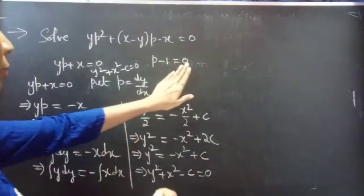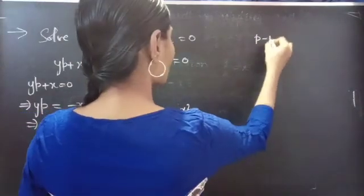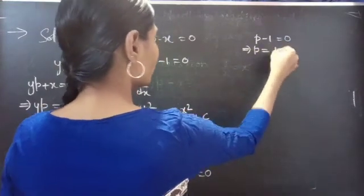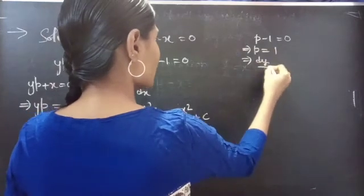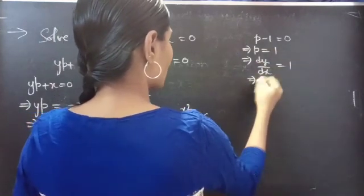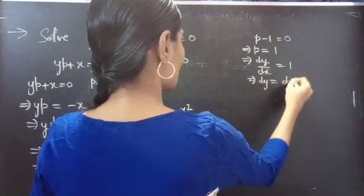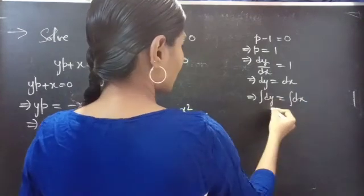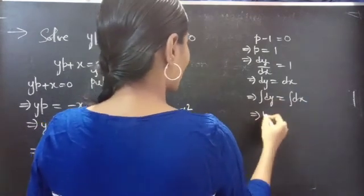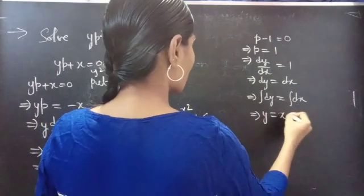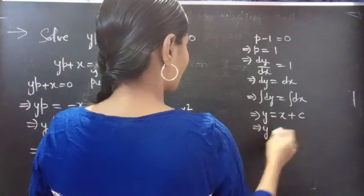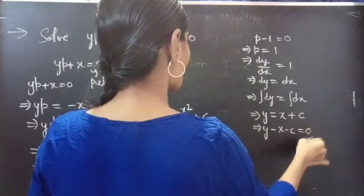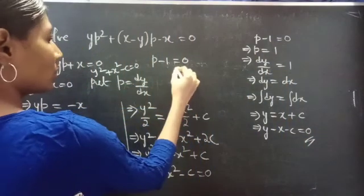Now we will find the solution for P minus 1 equals to 0. Consider P minus 1 equals to 0, which gives P equals to 1. Substituting P equals to dy by dx: dy by dx equals to 1, so dy equals to dx. Integrating both sides, we get Y equals to X plus constant C. Taking both terms to the LHS: Y minus X minus C equals to 0, which is the solution for P minus 1 equals to 0.